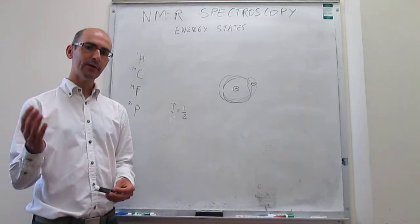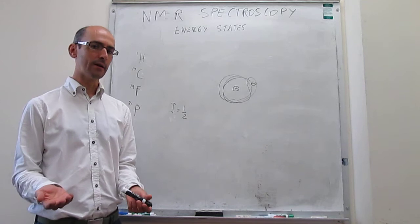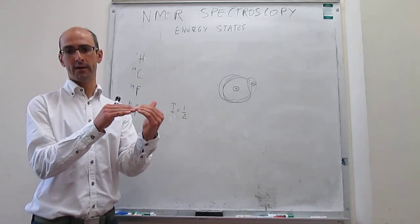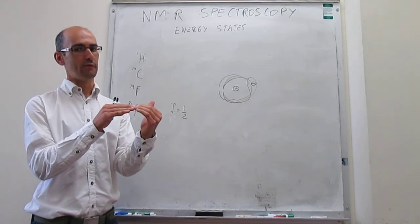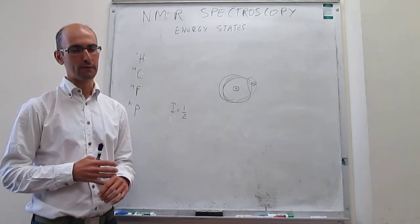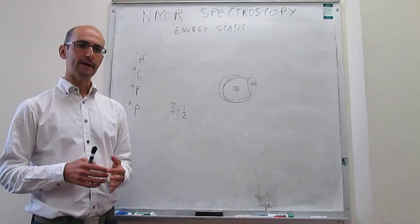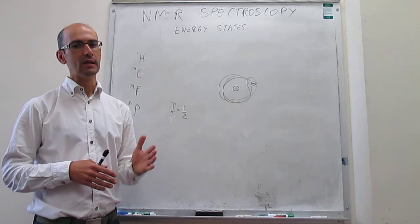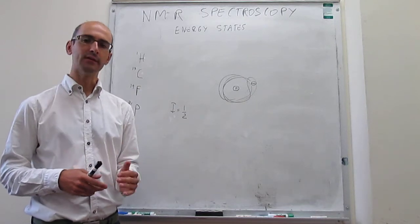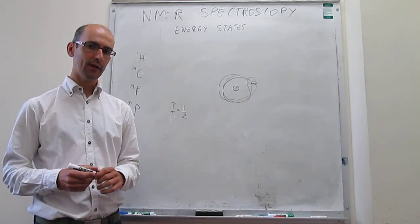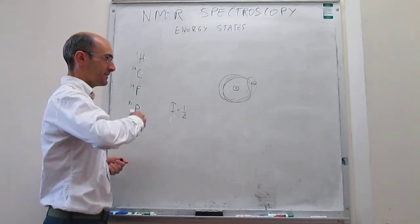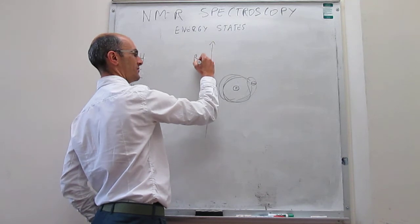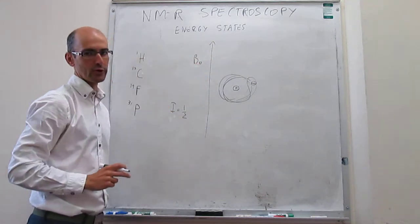In principle, spinning up or spinning down should have exactly the same energy, which means that if you have two spin states of exactly the same energy, then you can't do spectroscopy with them. But it turns out that you can change the energy of the spin states if you apply an external magnetic field. This is something that is very important about NMR spectroscopy — you're going to be putting everything in a large external magnetic field that we call B-naught.